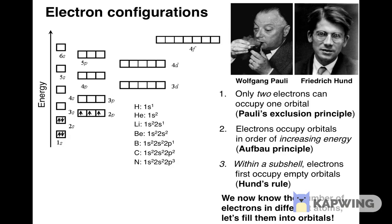For oxygen, atomic number 8, the first seven electrons occupy the same orbitals as for nitrogen. According to the Aufbau principle, the eighth electron must be placed in one of the three orbitals that make up the 2p subshell. There are no more empty orbitals left in this subshell, so according to Hund's rule, this electron will have to share one of the three orbitals in the 2p subshell with another electron. The electron configuration for oxygen is 1s² 2s² 2p⁴.